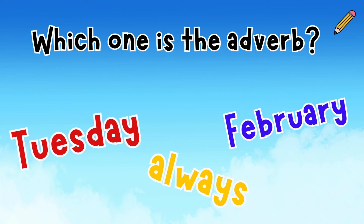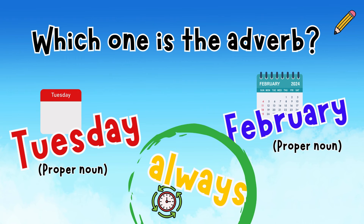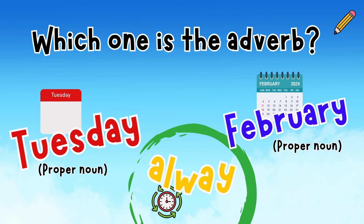So which one is the adverb? Is it Tuesday, always, or February? It can't be Tuesday because that's a proper noun with a capital letter. It can't be February because that's also a proper noun that starts with a capital letter. Always — it answers the question when. When does he do his homework? He always does his homework.